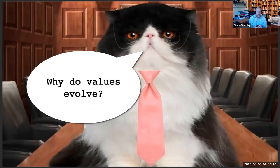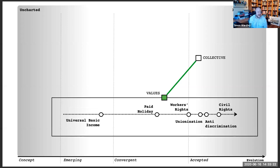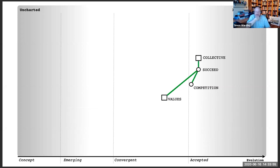How do values evolve? The process of evolution depends on competition. Those values belong to collectives, and we belong to many collectives — your football club, your family, your church, your nation, the company you work for. All those collectives have values. Some of those collectives are in competition with each other, and through that competition some collectives succeed, their values evolve, and some disappear.